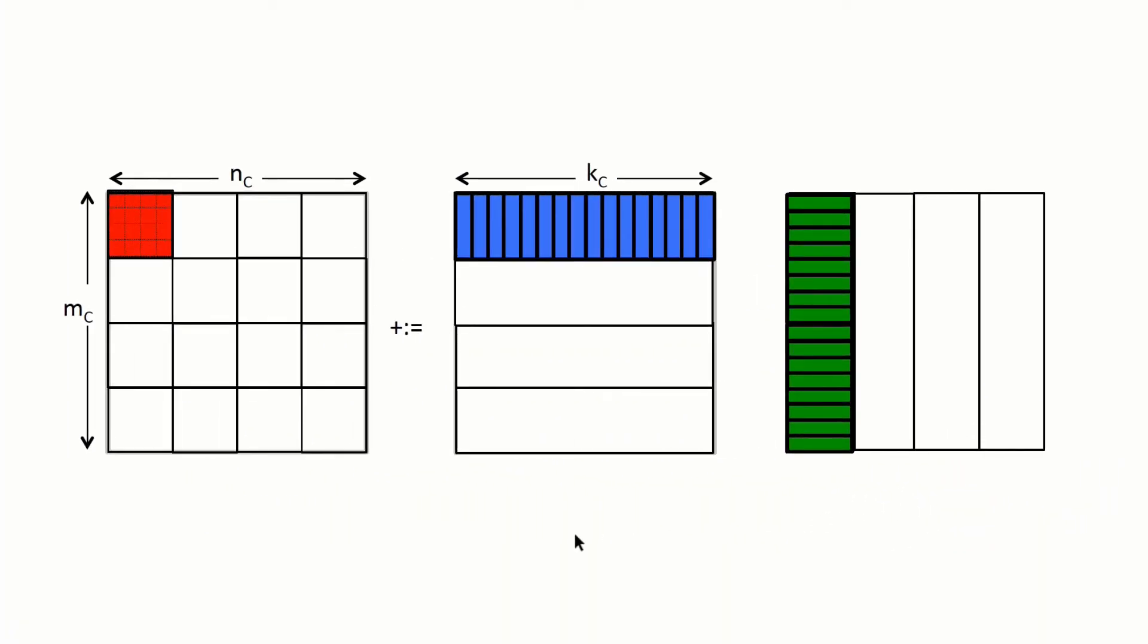So what we've done here is we've zoomed in on the three blocks, one from C, one from A, and one from B, that have been placed in the cache.